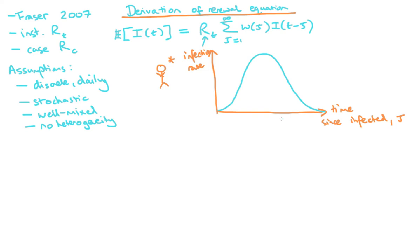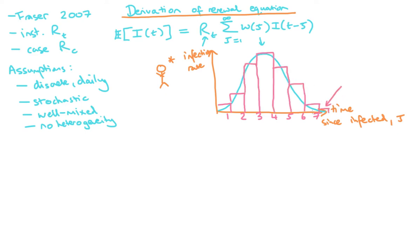Over the course of their infection, individuals are infectious at different rates. Initially it takes some time for the pathogen to proliferate through the body before it can be shed. So the infection rate starts low, reaches a peak, and then declines as the body clears the infection. I've drawn this as a continuous graph, but now I want to convert it into a daily quantity — discretizing along the axis at one day, two days, and so on.